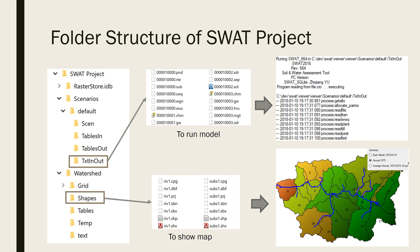Although there are a lot of files in this SWOT project folder, the viewer doesn't use them all. The only two folders we use in the viewer are the TxtInOut folder to run the model, and the shapes folder to load the shapefiles and show the model results on the map. In essence, we don't need all the other files. So even if you are not creating your SWOT model using ArcSWAT or QSWOT, you can still use the viewer to run the model and show the results on the map.